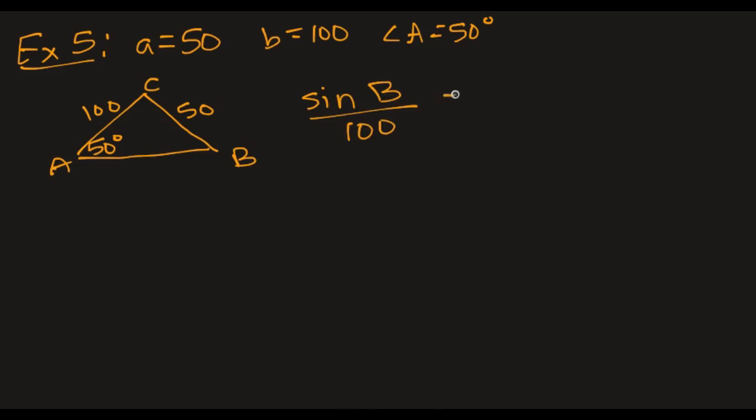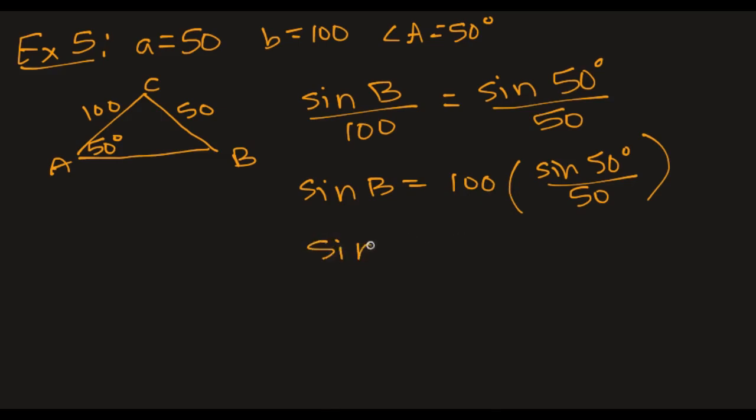Sine of B divided by 100 equals the sine of A over 50. So the sine of B is 100 times the sine of 50 degrees over 50. Okay, so according to my calculator, when I punch this in, I get that the sine of B is equal to 1.53. Now, if you proceed and try to take the inverse sine of this, what's going to happen? Your calculator is going to say invalid domain, because the sine never gets above 1. So this is not possible.